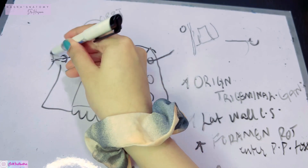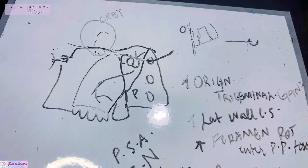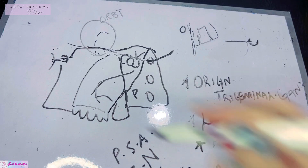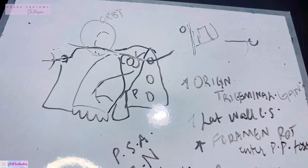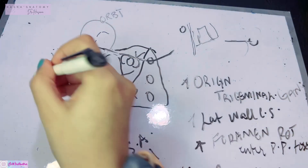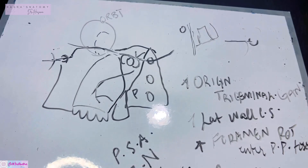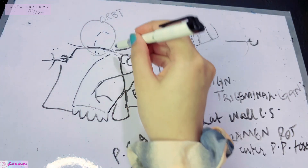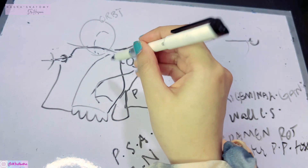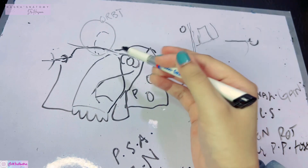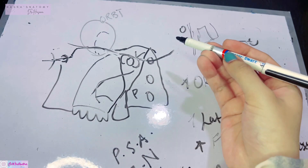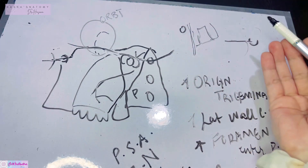When it emerges on the face, it gives labial, nasal, and palpebral branches — these are the terminal branches of the infra-orbital nerve. This supplies a large area of the skin of the face. On its way, the infra-orbital nerve also gives branches that coincide with those of the infra-orbital artery.